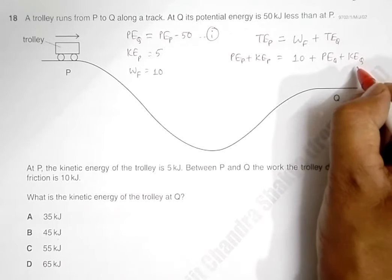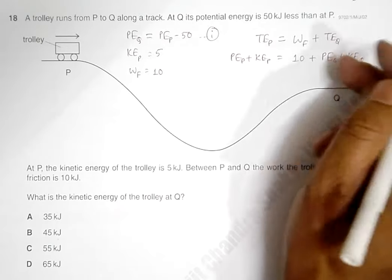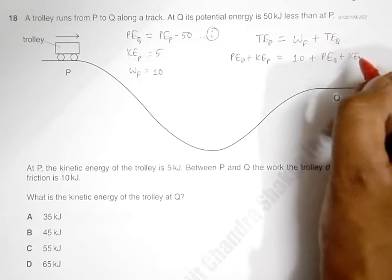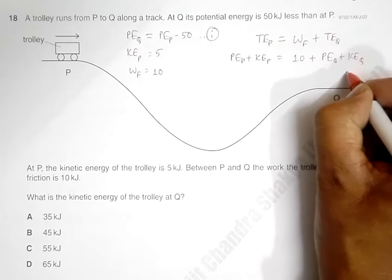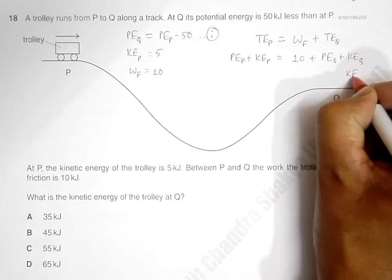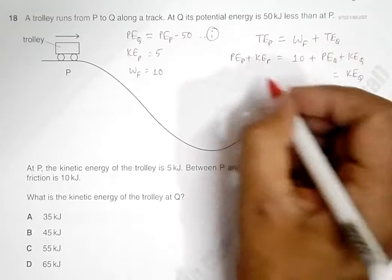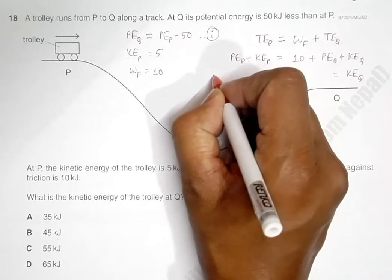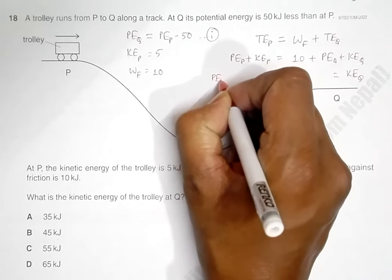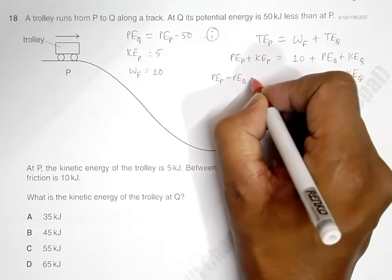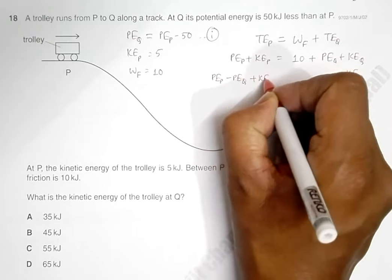Now we need to find the KE at Q. So what we can do is place KE at Q here and shift all the others to the other side. So KE at Q is equal to PE at P minus PE at Q plus KE at P minus 10.